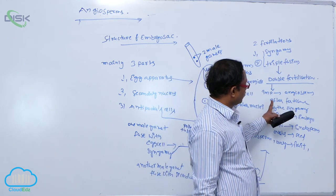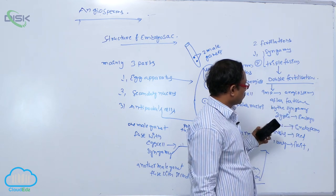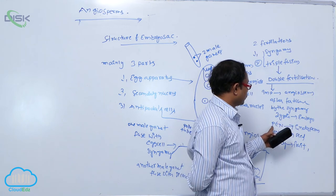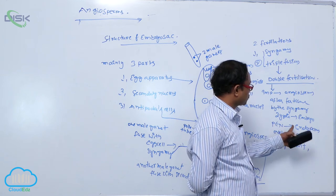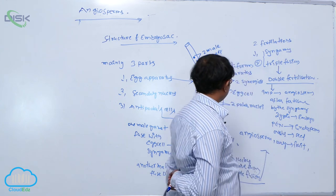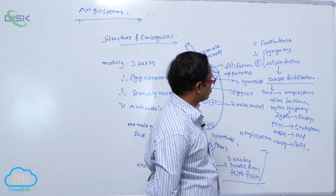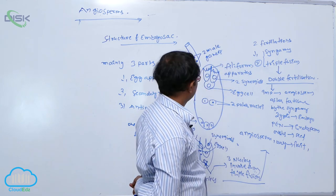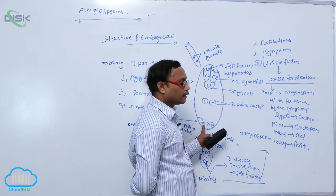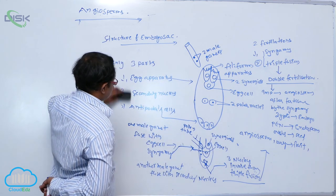Double fertilization is an important character of angiosperms. By syngamy, zygote is converted into the embryo. By triple fusion, primary endosperm nucleus is formed and converted into the endosperm. Ovules are converted into seeds, and ovary is converted into fruit. The remaining floral parts — stigma, style — are degenerated. In the embryo sac, antipodals are destroyed before or after fertilization.